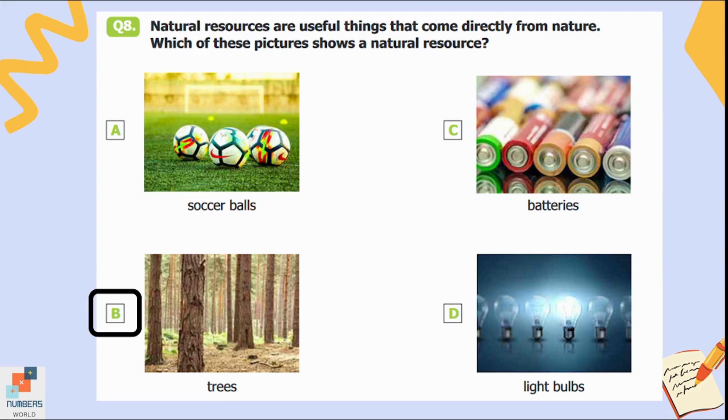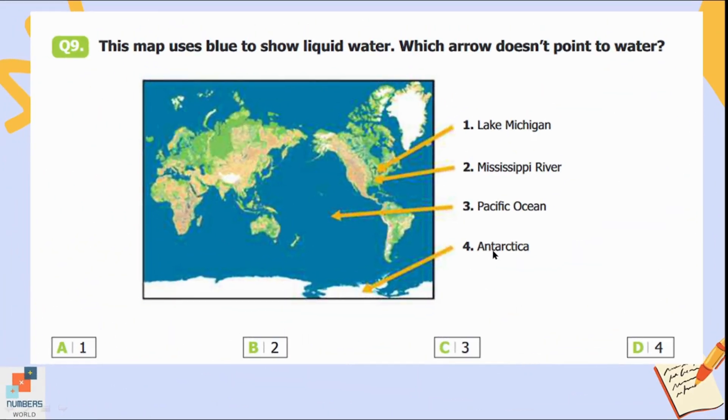Question number nine: This map uses blue to show liquid water. Which arrow doesn't point to water? One is Lake Michigan, two is Mississippi River, three is Pacific Ocean, and four is Antarctica. We can see that the first three arrows are pointing towards liquid water because the words lake, river, and ocean are written. The fourth arrow is pointing towards the continent Antarctica, which is covered in ice, so option D is the correct answer.